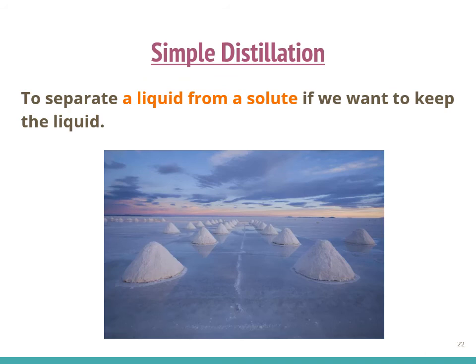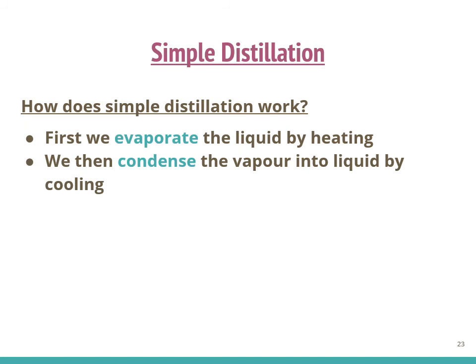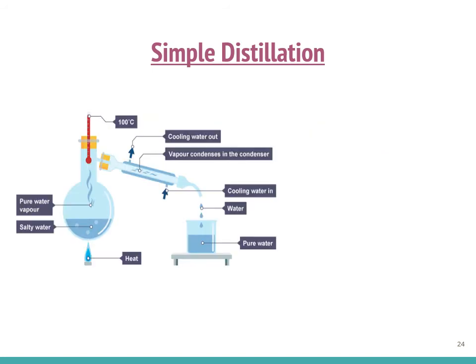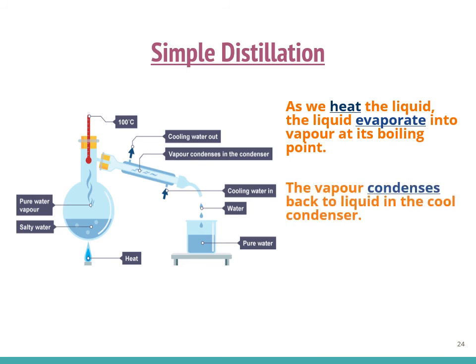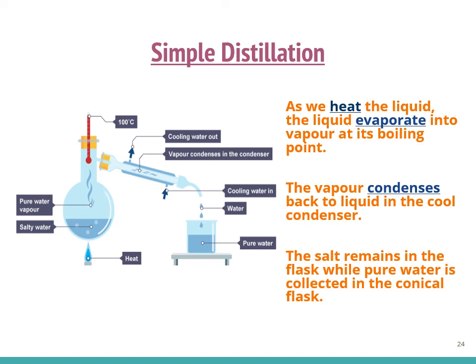The fourth technique is simple distillation. It is used to separate a liquid from a solute when we want to keep the liquid. For instance, we want to separate the water from sea water, which contains water and dissolved salt. First, we evaporate the liquid by heating, then condense the vapor into liquid by cooling. As we heat the mixture, the liquid evaporates into vapor at its boiling point, the vapor is condensed back to liquid in the cool condenser, the salt remains in the flask, and pure water is collected in the conical flask.